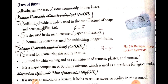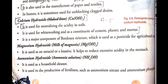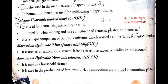The second base is calcium hydroxide. It is used for neutralizing the acidity in the soil. It is also used for whitewashing, and as a constituent of plaster, cement, and mortar — so whenever cement is manufactured, some amount of calcium hydroxide is mixed in.